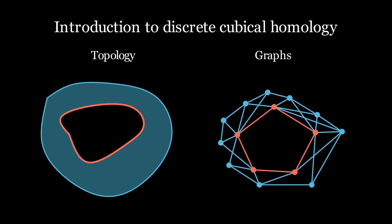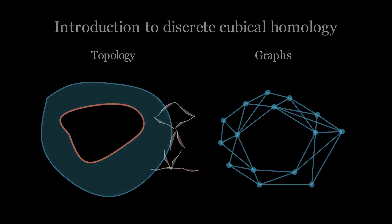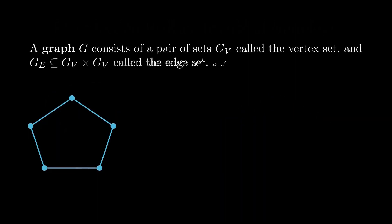In order to make this more formal we first need to define what we're talking about when we say a graph. So for us a graph G is actually a pair of sets. One is GV and called the vertex set, and the other is GE and called the edge set. And this is a subset of GV Cartesian product with itself.